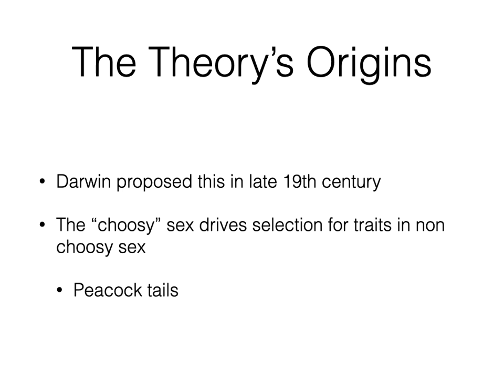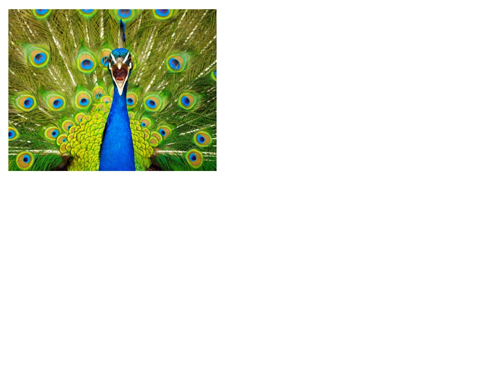Peacocks have long, extravagant tails that are very pretty but make them much more vulnerable to predation and conspicuous to predators. Darwin reasoned: why would this seemingly maladaptive trait evolve unless it conferred differential success in reproduction? The idea is that male displays otherwise detrimental to survival became a signal for male health and strong genes. If a male can afford to carry this big extravagant tail, he must be really good at surviving — so females were driving the presence of these traits.